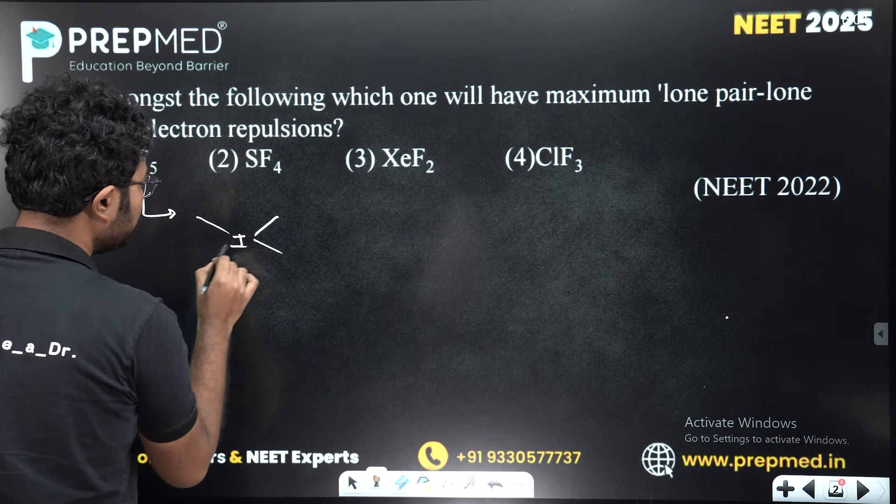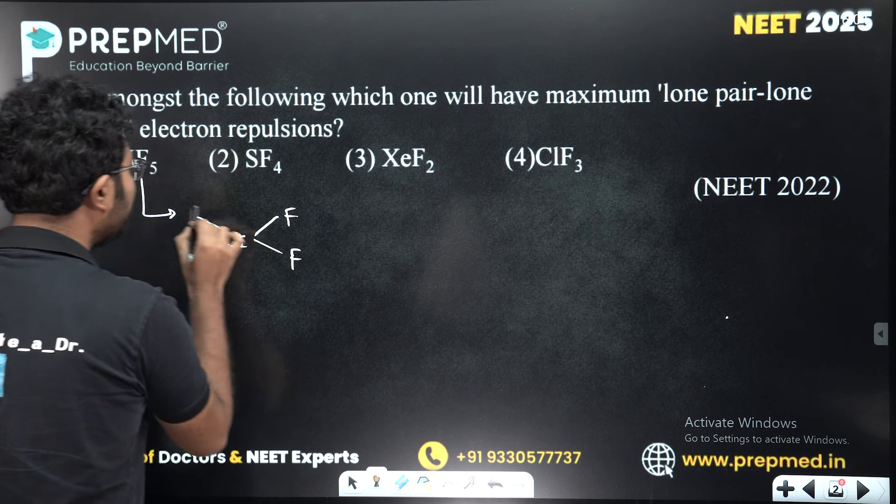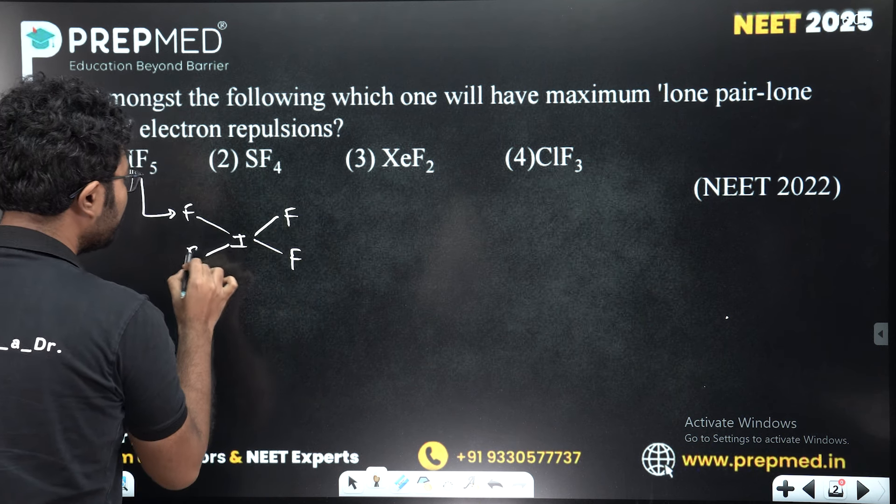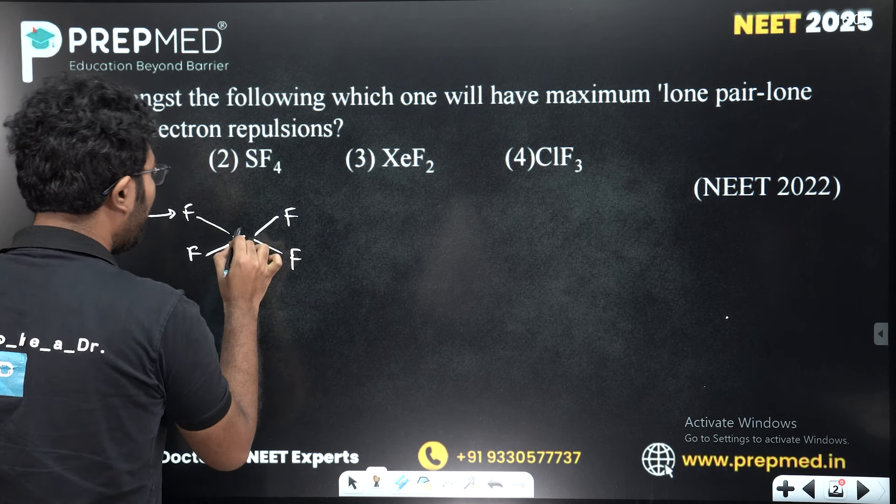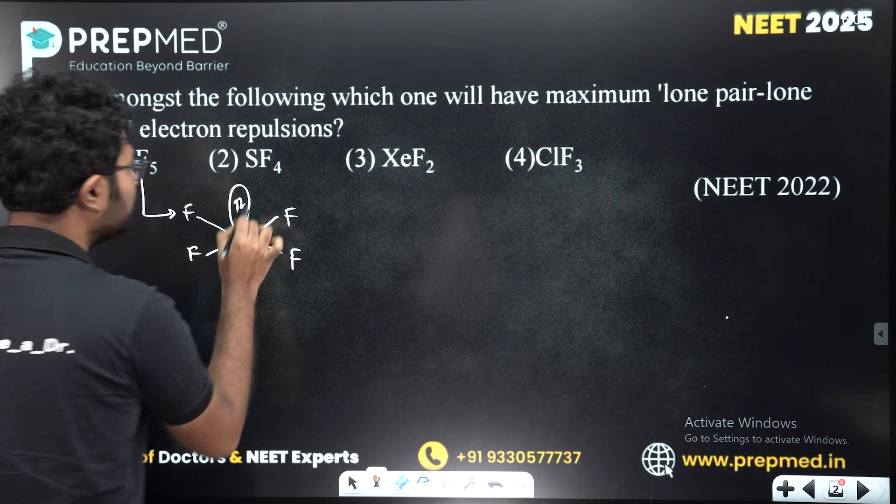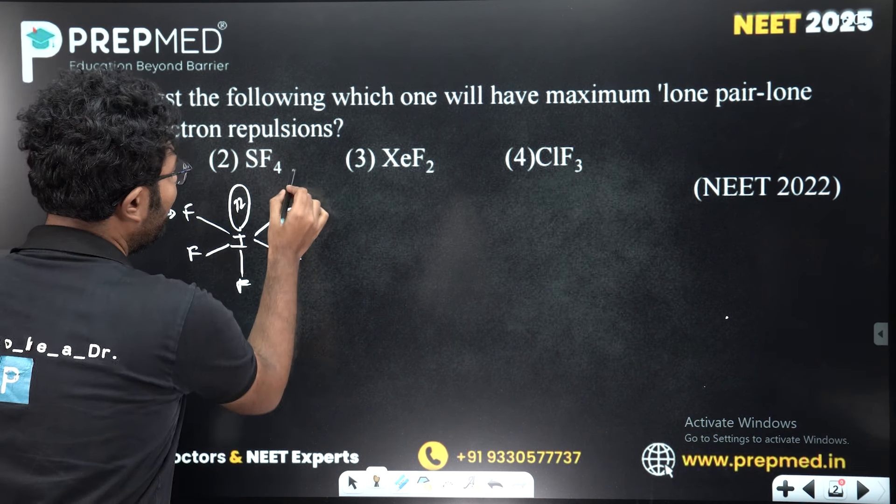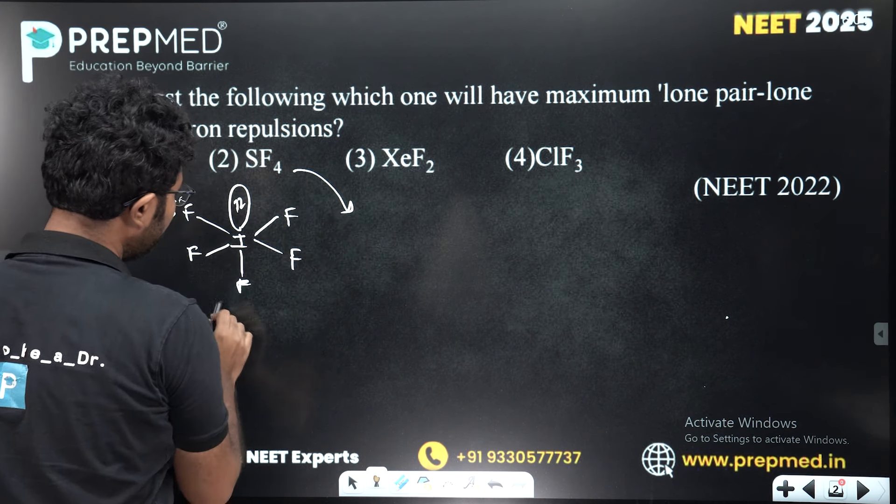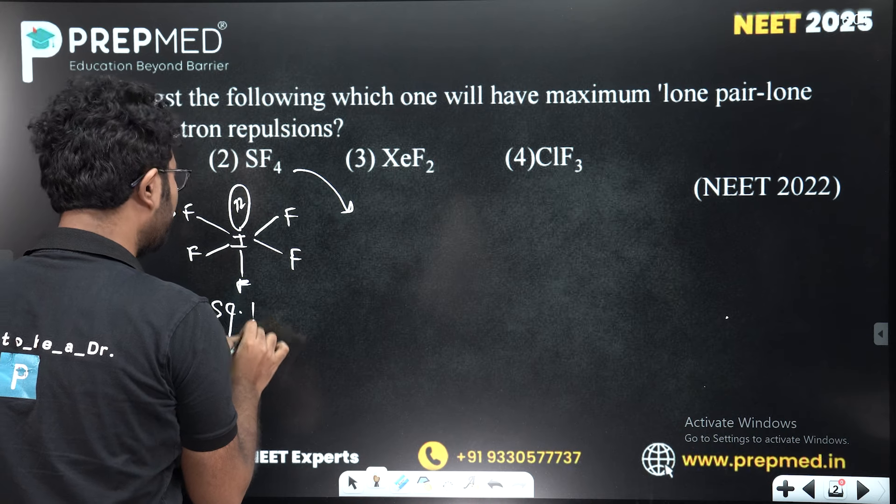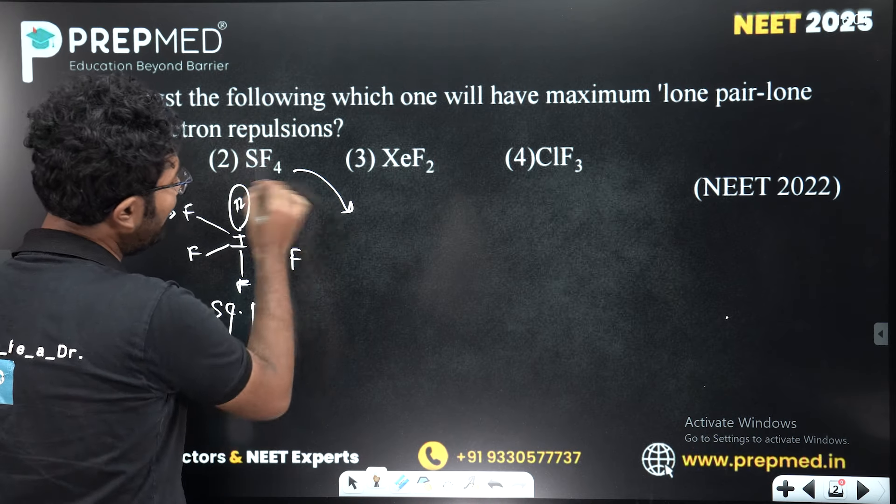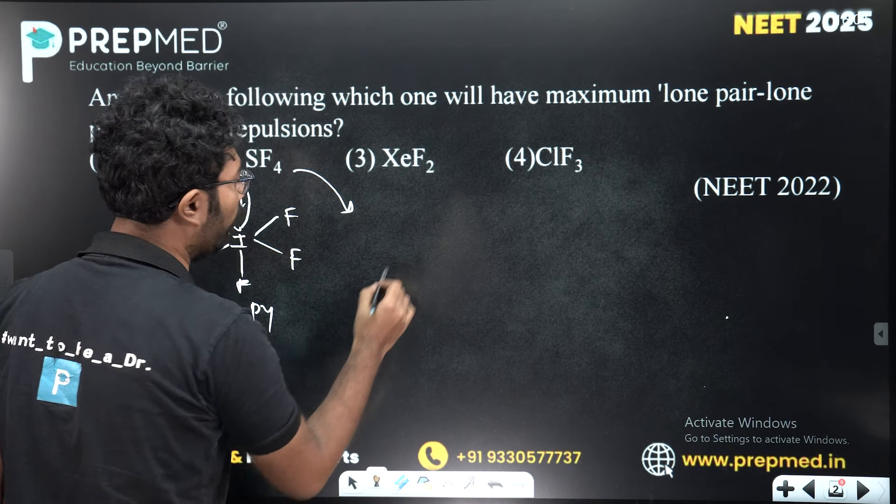We have five fluorines and one lone pair. Now SF4. SF4 is a see-saw structure.